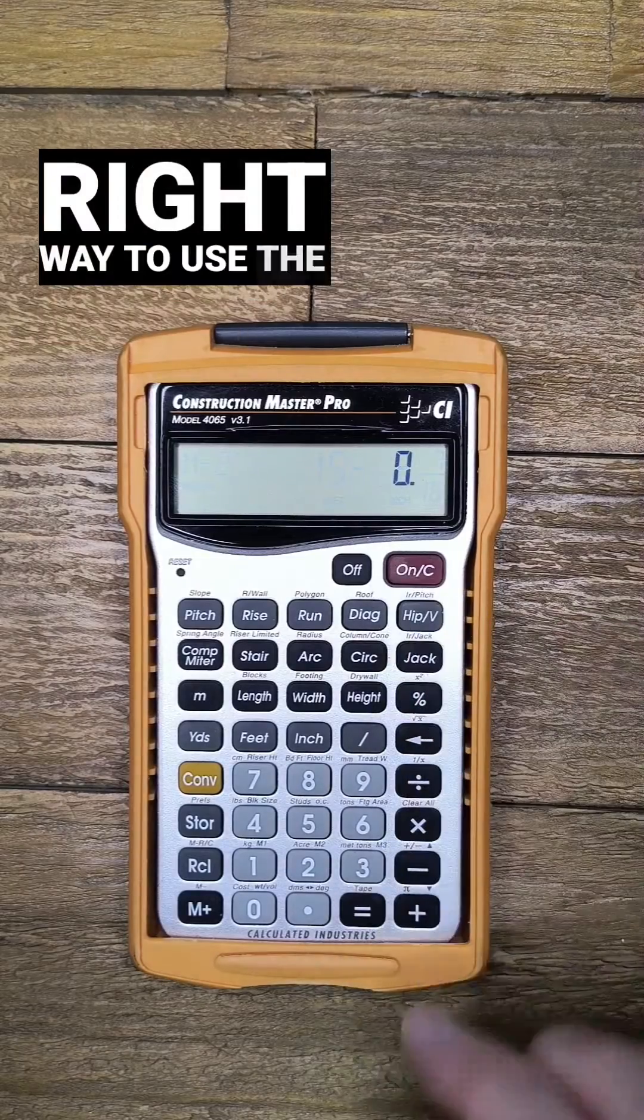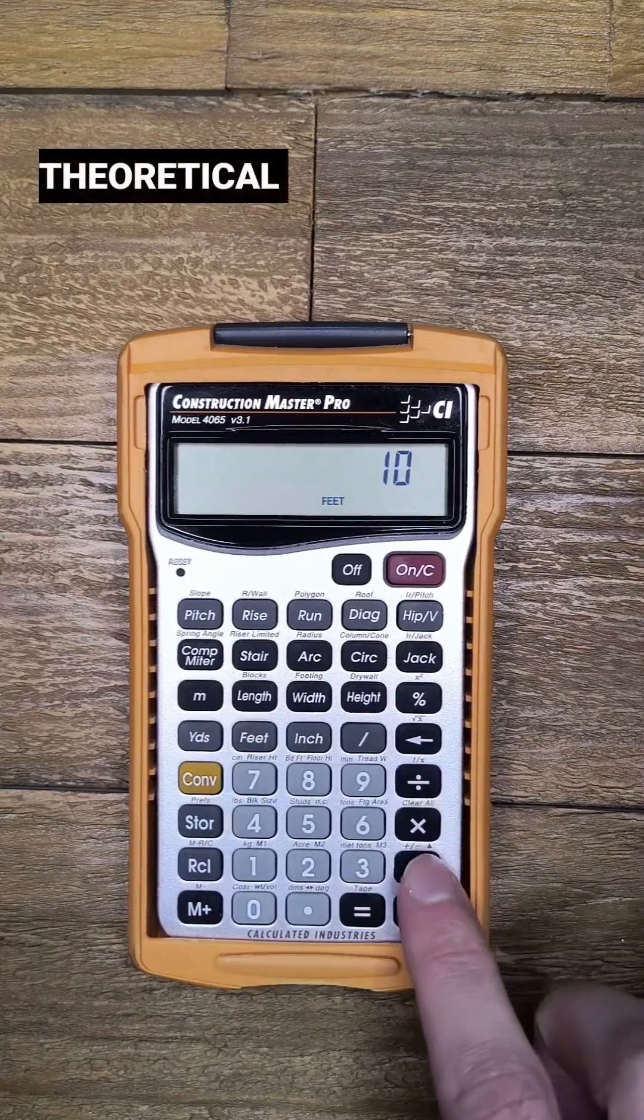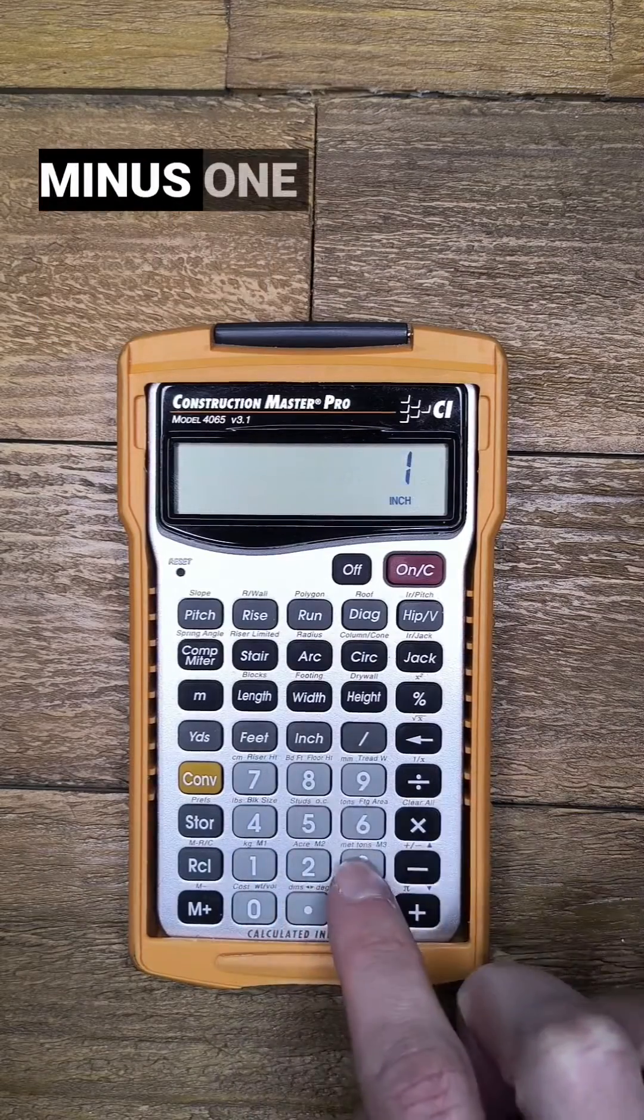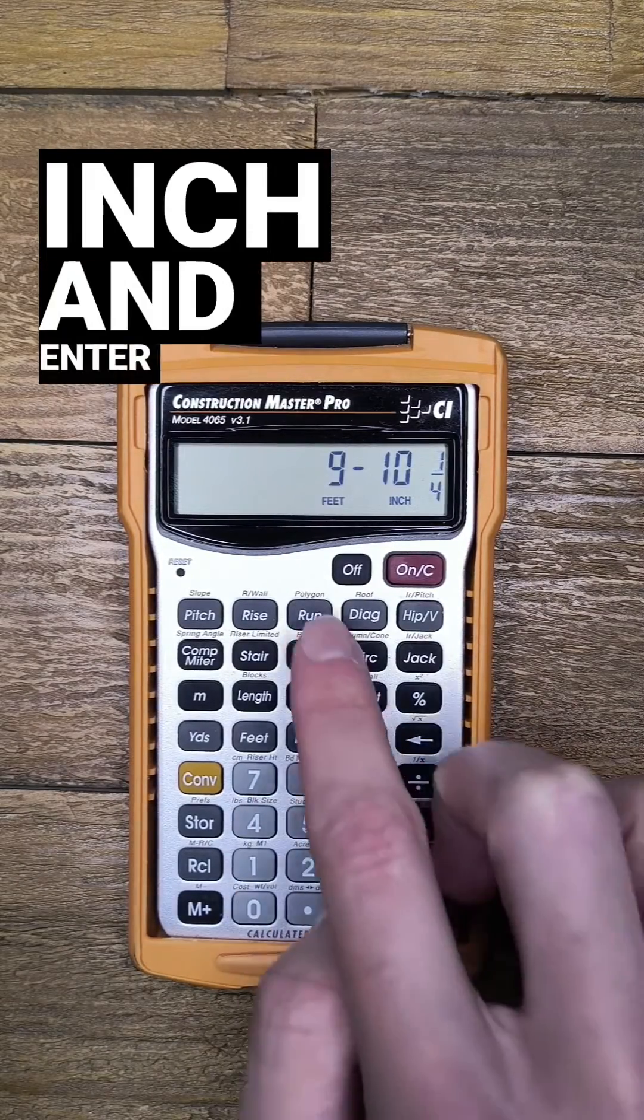The right way to use the hip V button in this scenario is to take the theoretical run, subtract half the thickness of the common rafters, so minus 1 and 3 quarters of an inch, and enter that as run.